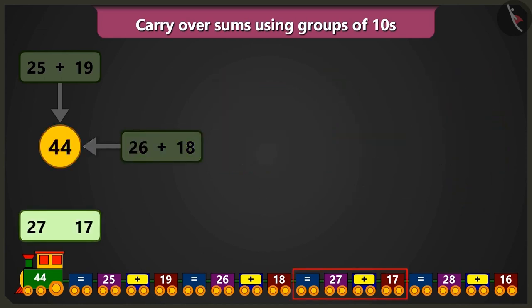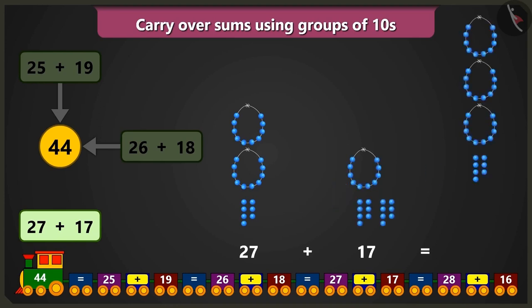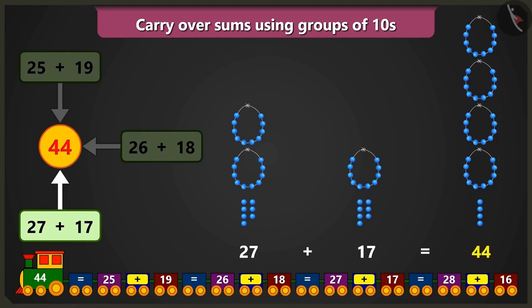Now what will be the sum of 27 and 17? Let us take 27, that is 2 tens and 7 ones, and add 17, that is 1 ten and 7 ones. 7 ones when added to 7 ones will equal 14 — that means 1 ten and 4 ones. So here also adding 4 tens and 4 ones results in 44 only.